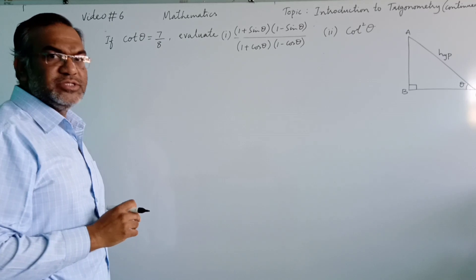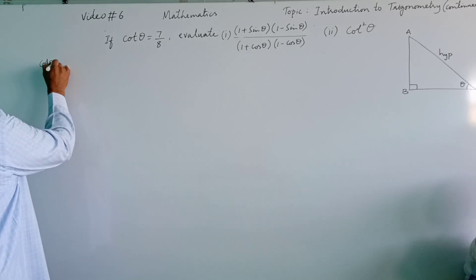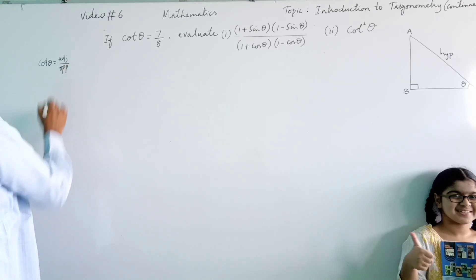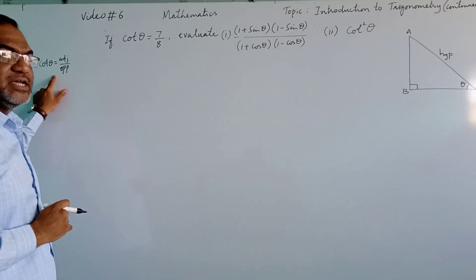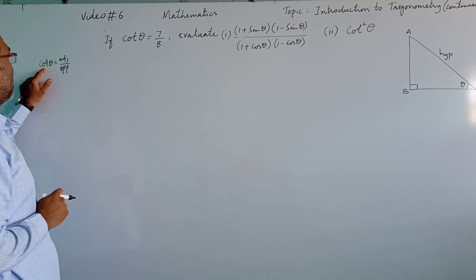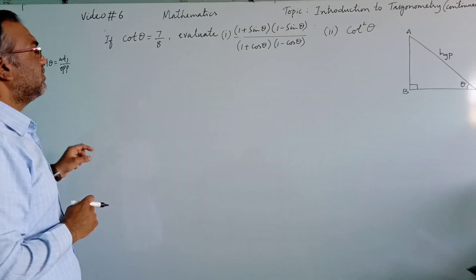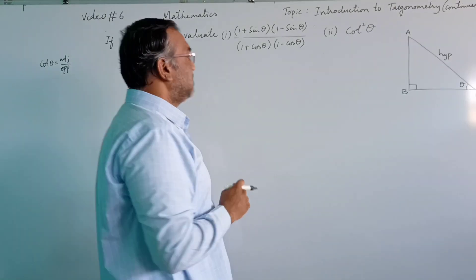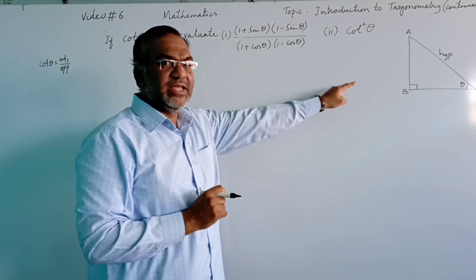We know the definition of cot theta. Cot theta is adjacent divided by opposite — it is the reciprocal of tan theta. Tan is opposite divided by adjacent, and cot is adjacent divided by opposite. So we will first find the side lengths.